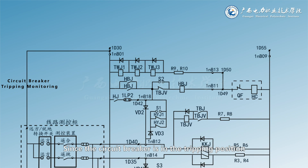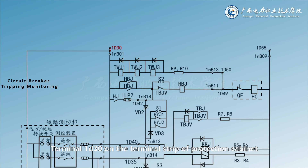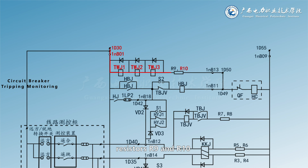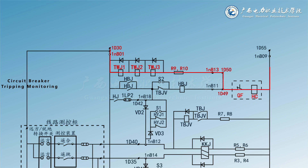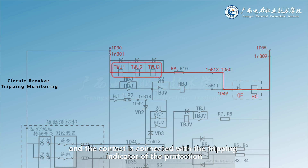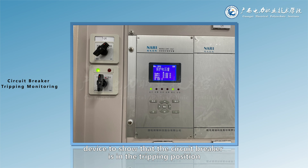Since the circuit breaker is in the tripping position, its auxiliary contacts are closed, forming the following electrical paths: 1D30, 1NB01, TWJ1, TWJ2, TWJ3, R9 and R10, 1NB13, 1D50 and 1D49, QF, HC, 1NB09, 1D55. Therefore, the coil of TWJ1 and TWJ3 is excited, and the contact is connected with the tripping indicator of the protection device to show that the circuit breaker is in the tripping position.